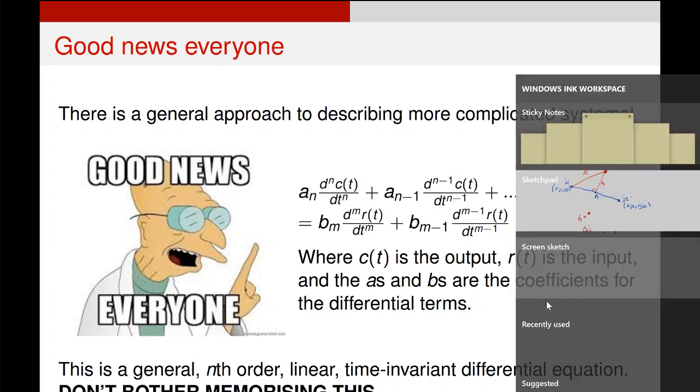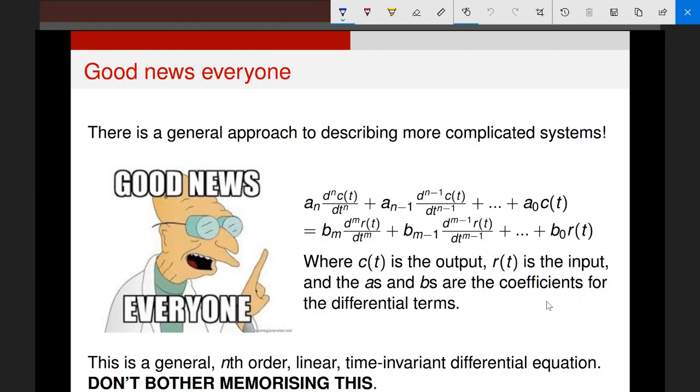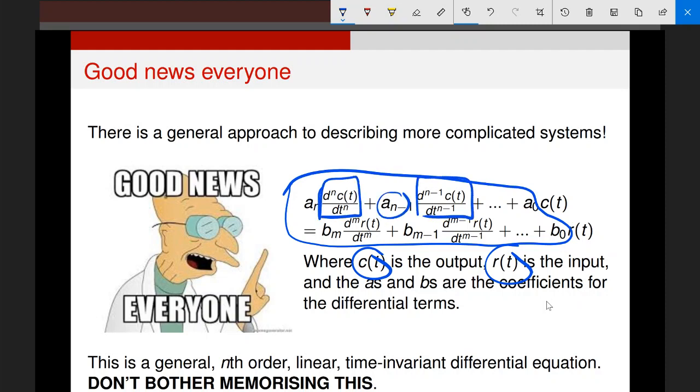But all it is saying is a linear time-invariant system can be written in a general form that relates the input, which is r(t), to the output c(t) by using all of these additional factors and terms. Essentially what they are, each one of these terms is a derivative with some form of coefficient.